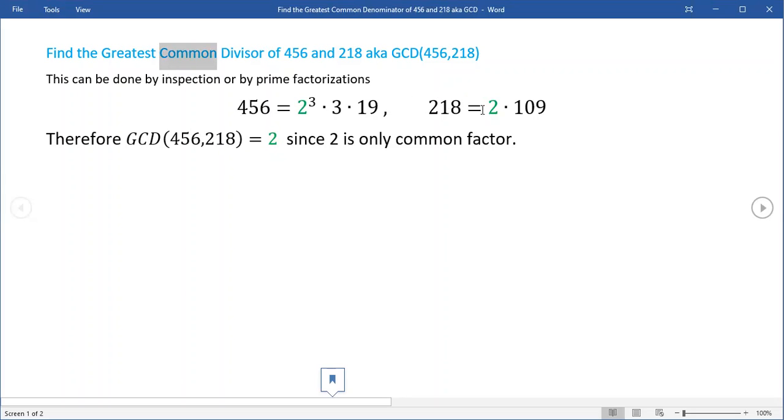Well, two is definitely common to both of these. And that's it. Not two cubed, but just two. There's only one copy of two over here, two over here. So two is the greatest common divisor. Hope that helped.